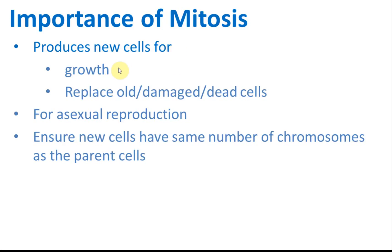The importance of mitosis: it is to produce new cells for growth, and to replace all damaged or dead cells. It is also for asexual reproduction in certain living things — reproduction without sex. New cells have the same number of chromosomes as the parent cell, which is very important because chromosomes carry the genetic information of the organism. We need to ensure that the content and number of chromosomes remain unchanged so that the new cells have the same characteristics.